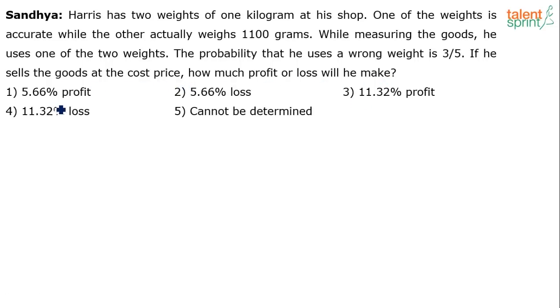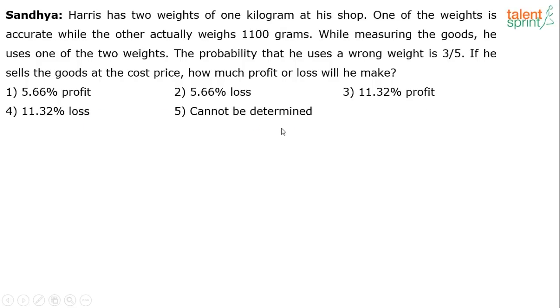The options given are: 5.66% profit, 5.66% loss, 11.32% profit, 11.32% loss, or option 5 — cannot be determined.